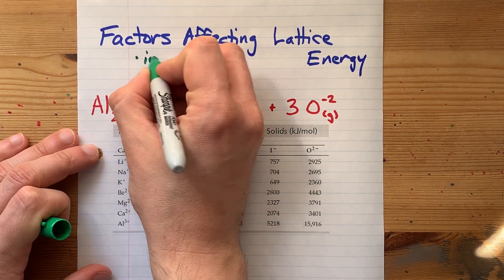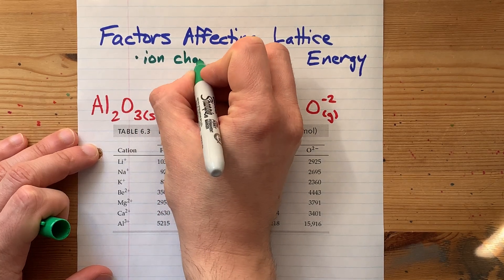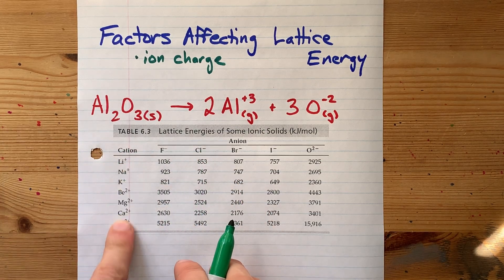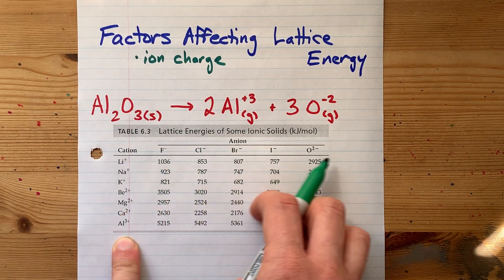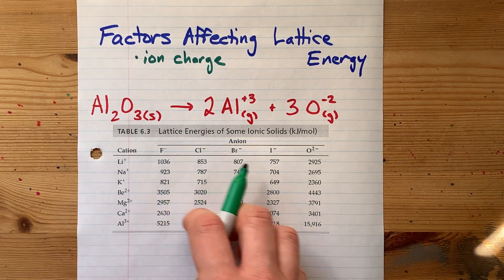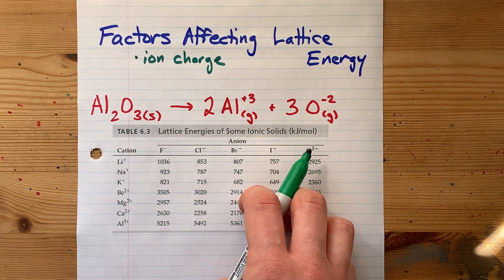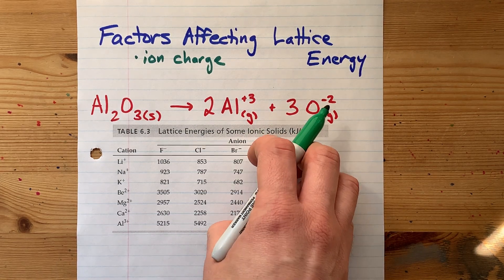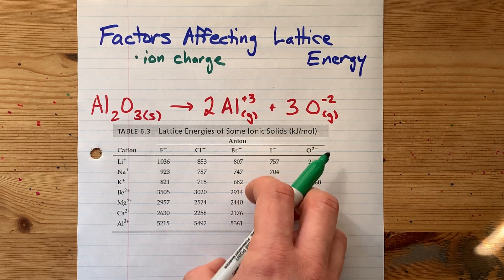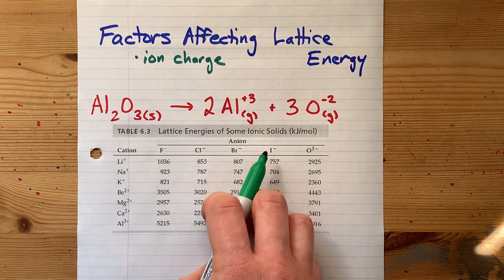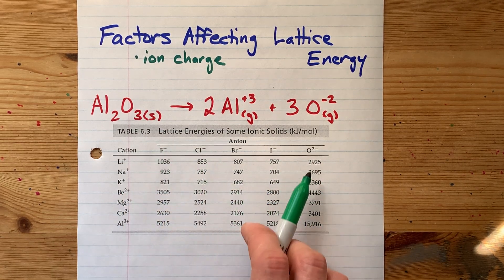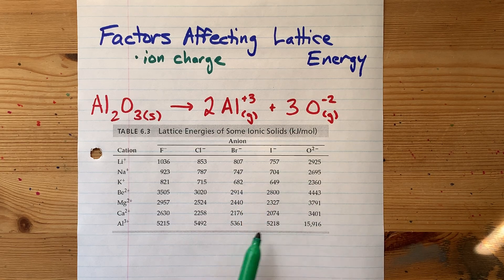The absolute first thing that you need to consider is ion charge. Here in the table, we have a list of the lattice energies when you pair up each of the cations with each of the anions. You'll notice that the highest value in each row corresponds to O2-, which has a charge of 2 minus, and so those ions are doubly as attracted to positive ions as minus 1 ions, simply because they have double the charge.